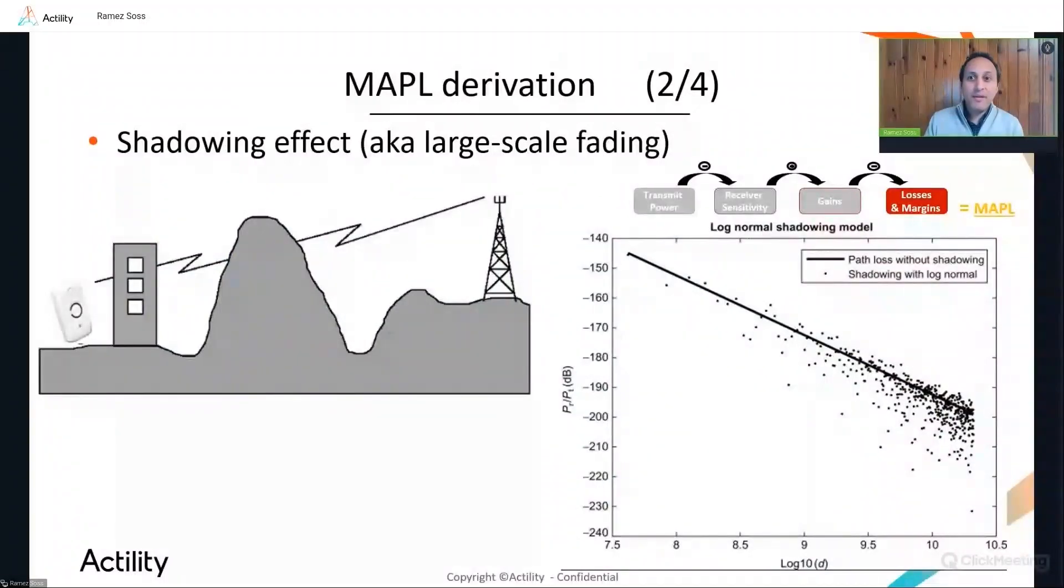Another propagation phenomenon is about the shadowing effect. So empirical propagation models predict an average path loss versus distance and typically these models are calibrated in a way to have the average error versus field measurement as close as possible to zero. And then each propagation model is associated with a standard deviation representing the path loss variation with respect to the average predicted value. This variation is caused by shadowing effects due to obstacles, buildings, trees, and so on. And typical standard deviation of most propagation models is around 8 dB. Therefore, unless an additional margin is considered in the RF planning, the predicted path loss derived by the propagation model at a given distance shall be valid with only 50% probability since it's an average prediction. And to guarantee higher coverage probability, like 95%, you must add a large-scale shadowing margin.